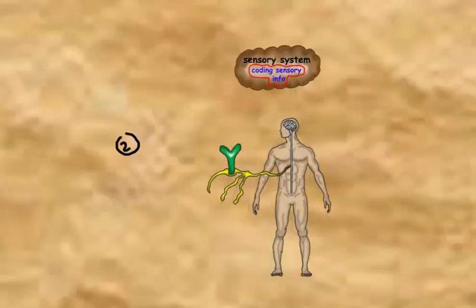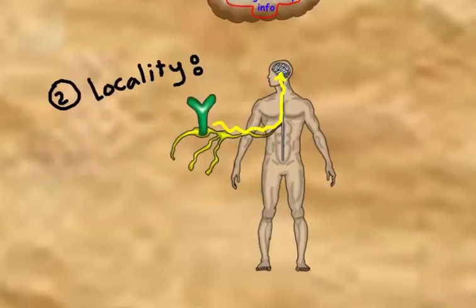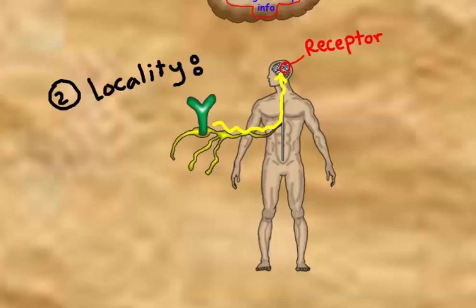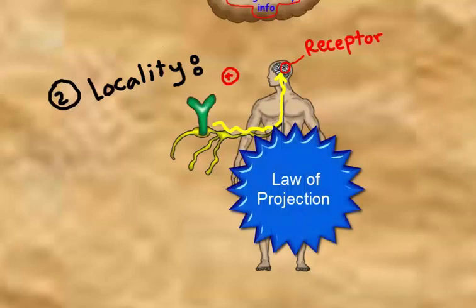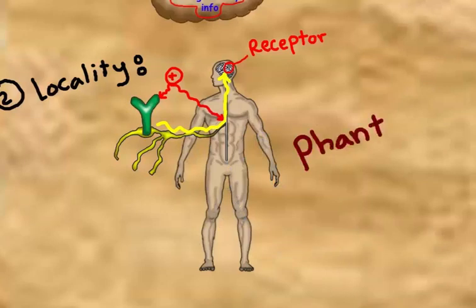The sensory cortex can also discriminate or identify the site of stimulation — this is called locality. It means that the conscious perception of a particular sensation is projected in the brain according to the site of the stimulated receptors, irrespective of where the stimulation occurred along the pathway. This is called the law of projection.